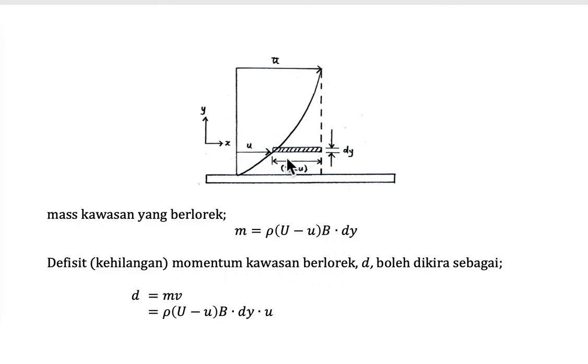Then the deficit momentum for the shaded area here can be calculated by mass times velocity. So the mass is equal to rho times capital U minus U times B times dy, and velocity here is equal to U because this is the velocity that molecule travels from here to here.